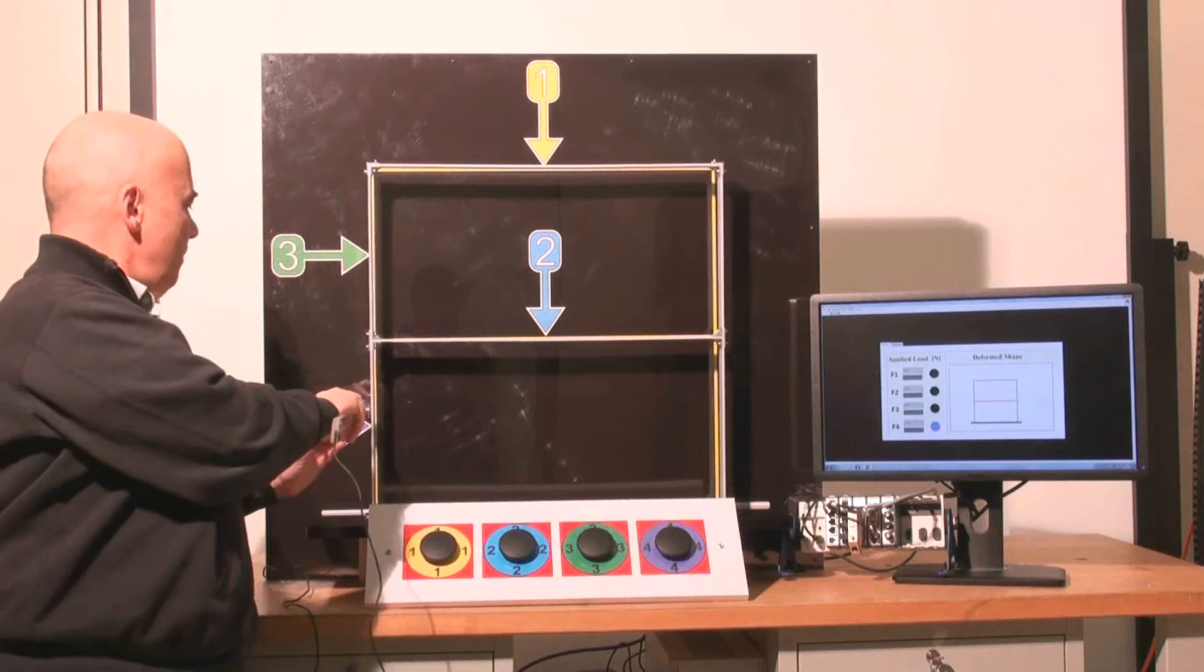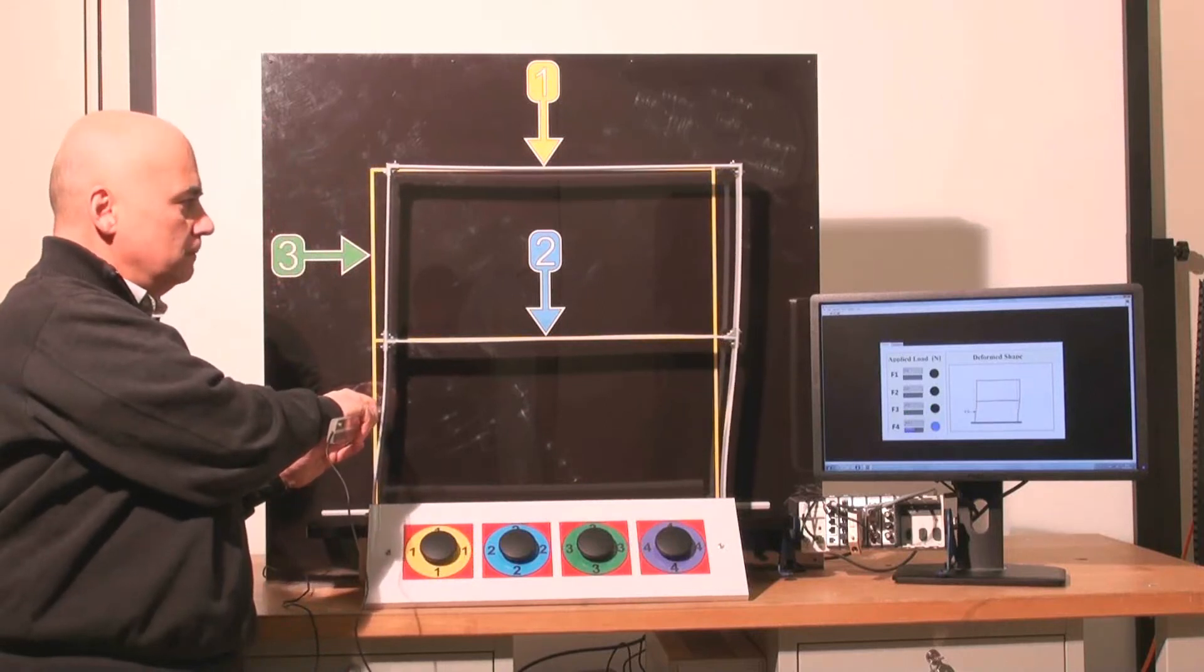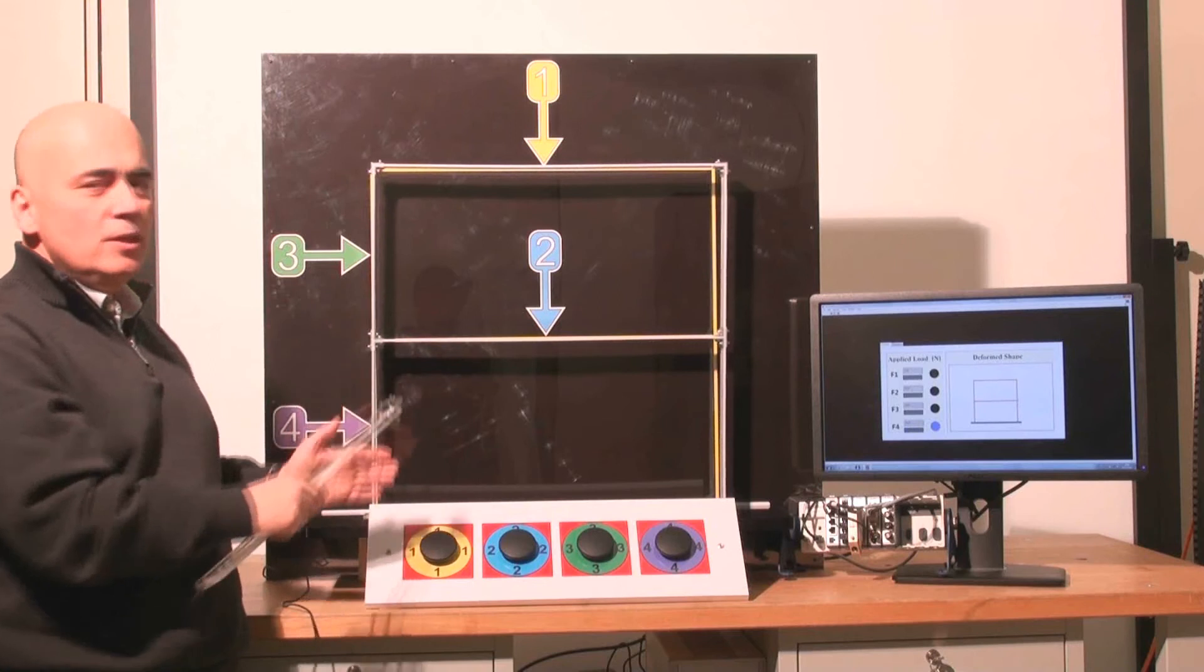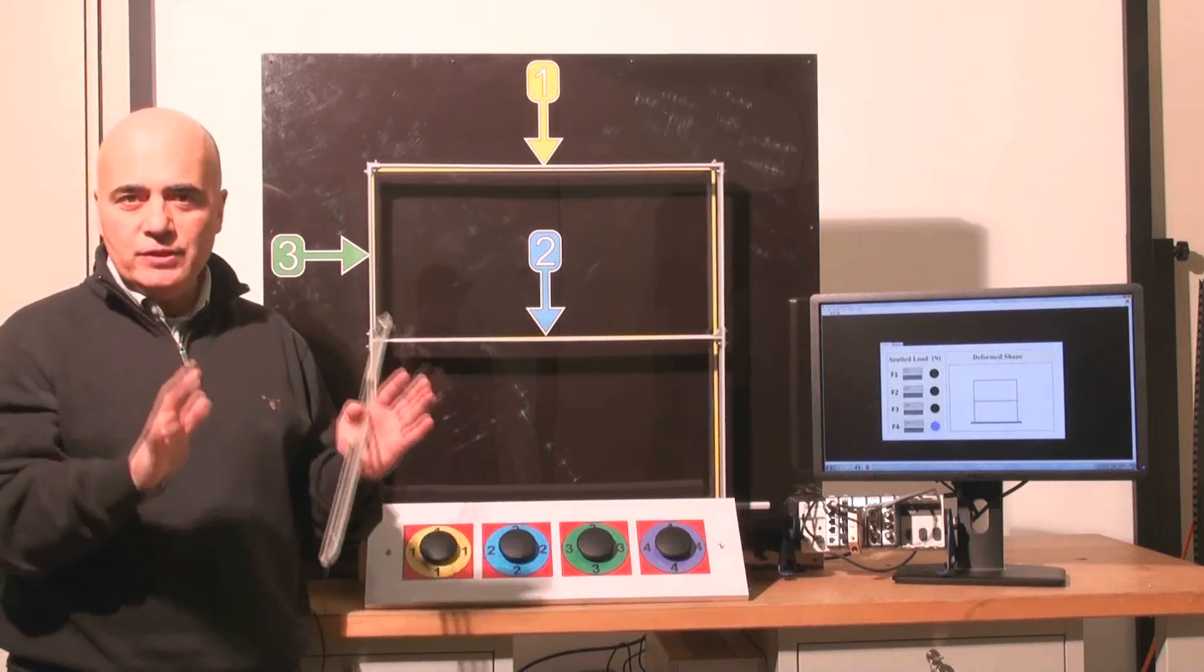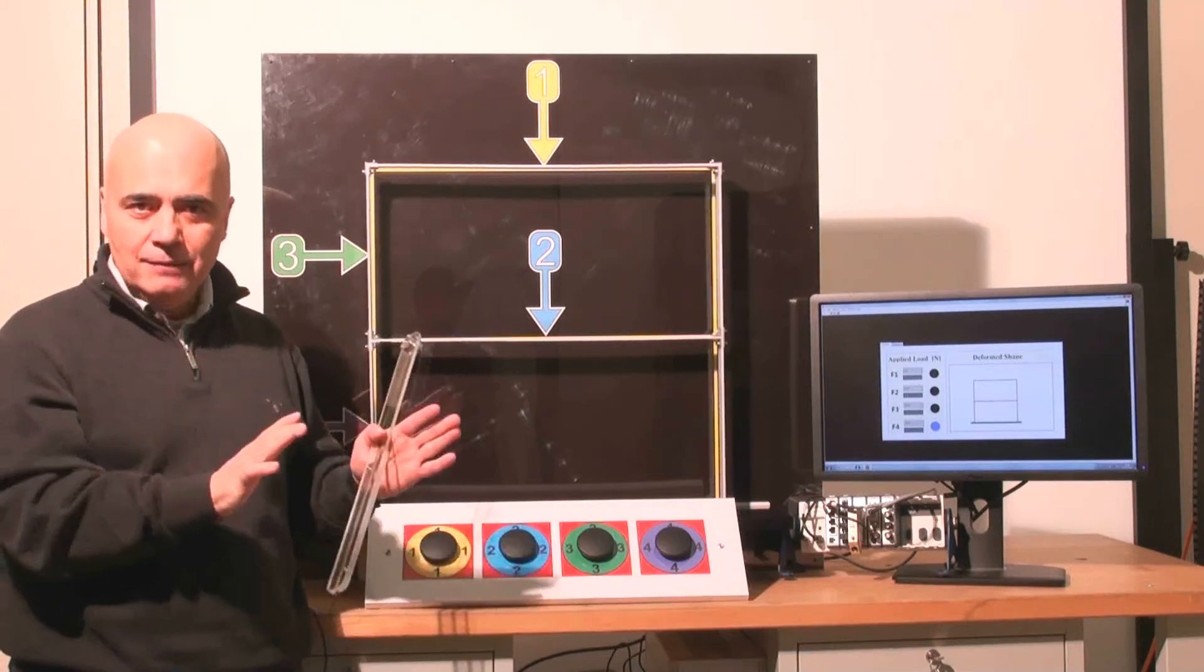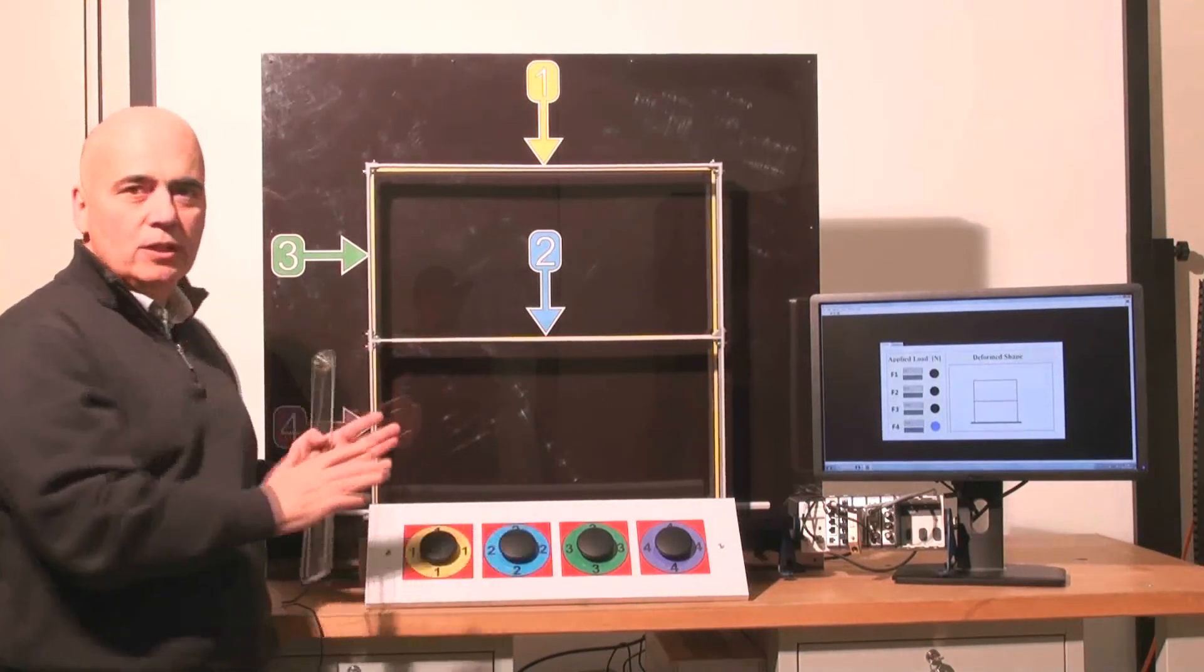Of course number four is stiffer, and with this simple model, untrained people can understand how calculations done by engineers can be tied to the reality, to the real physical world.